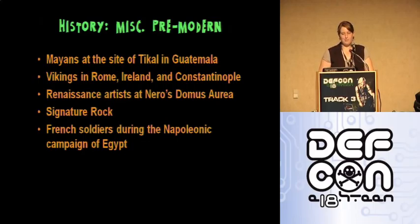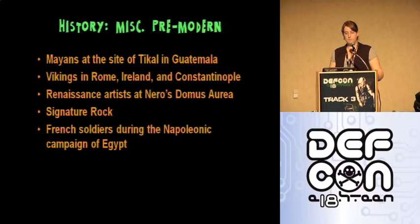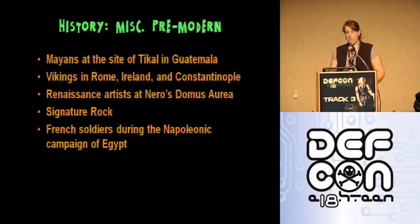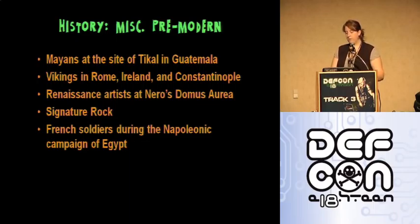Various Renaissance artists would travel to the ruins of Nero's Domus Aurora in order to carve or paint their names. French soldiers would carve their names on monuments during the Napoleonic campaigns in Egypt, and travelers along the Oregon Trail left their names at Signature Rock. That is all of the pre-modern stuff — none of the techniques used back then are used in modern-day graffiti, even though the messages and feelings behind them are the same as what's seen today. With that said, we are now moving on to the history of modern-day graffiti.